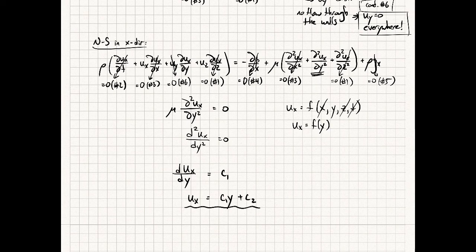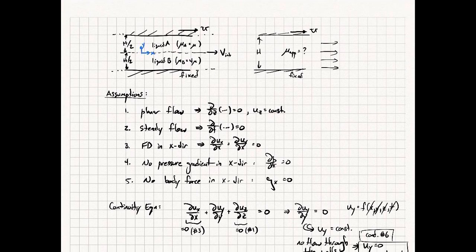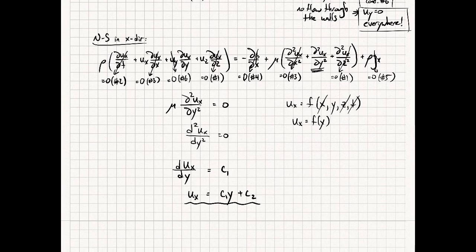Now we start to differentiate between the fluids by finding constants C1 and C2 using boundary conditions, which are different for each fluid. For liquid B, we have a boundary condition at the bottom wall; for liquid A, we have one at the top wall; and then there's a boundary condition between the two at the interface.